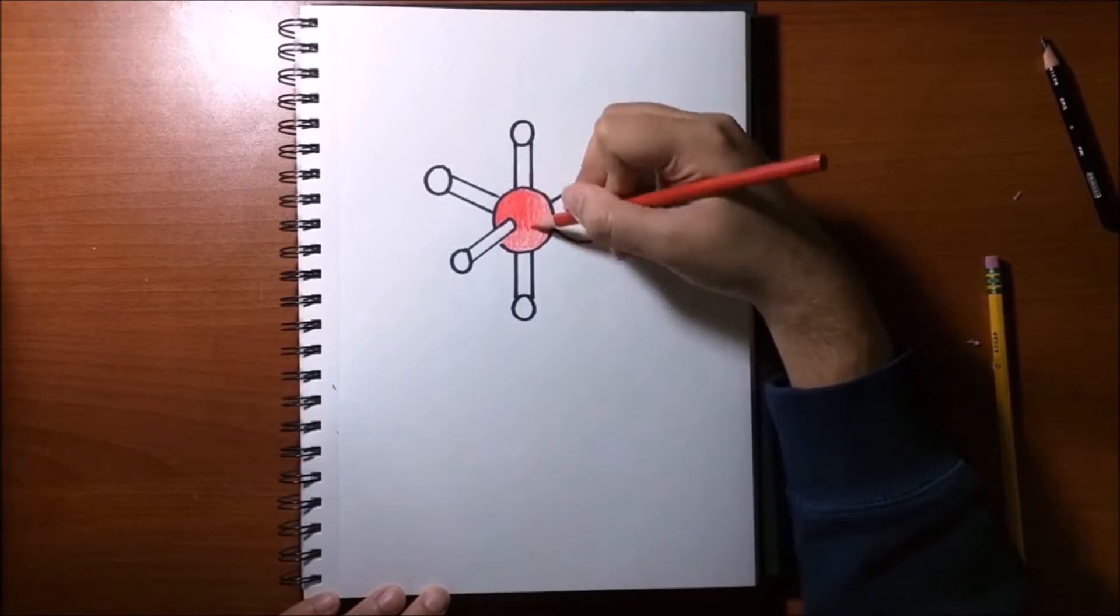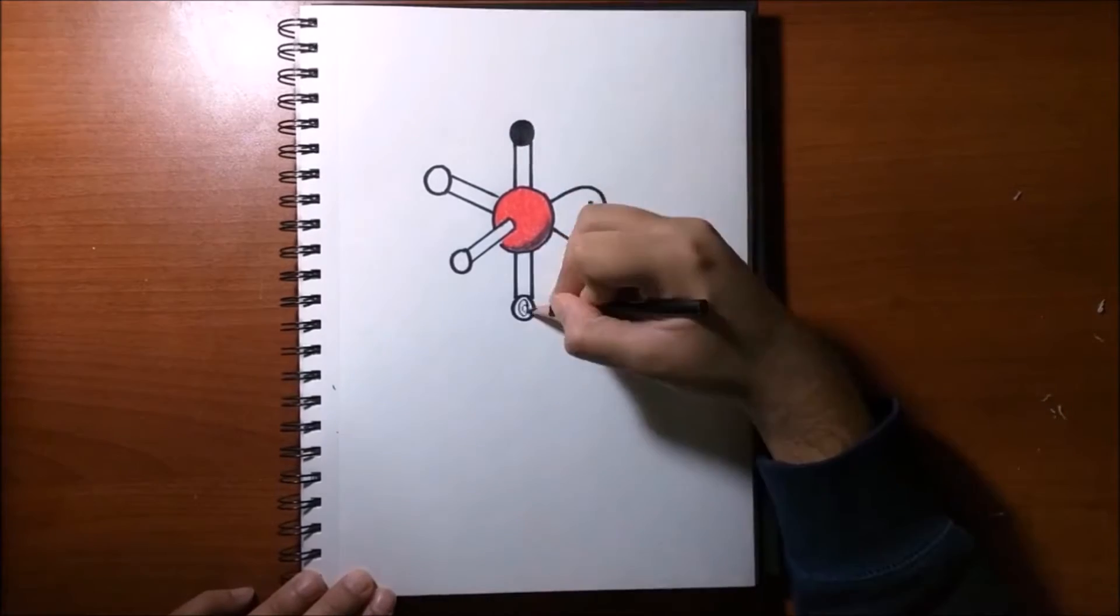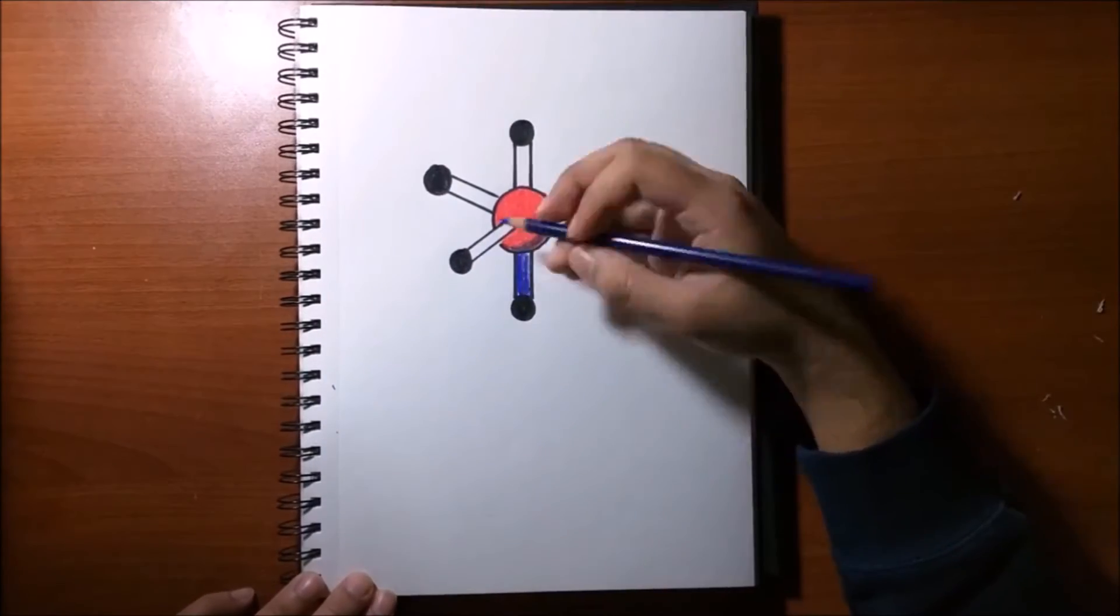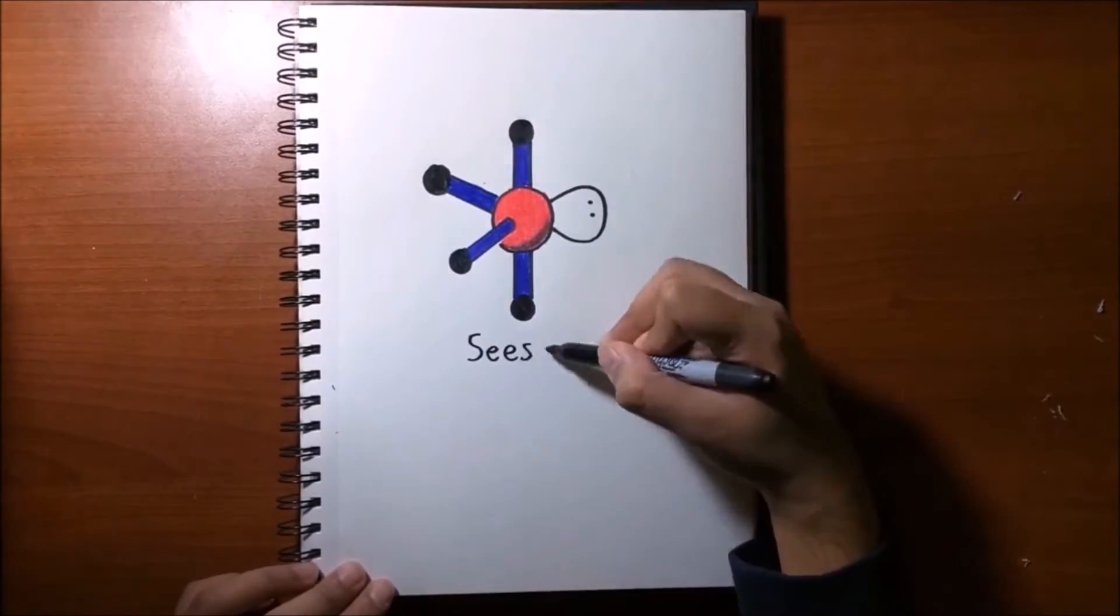This arrangement of electron groups forms bond angles less than 90 degrees along the axis and less than 120 degrees otherwise. An example of this shape is sulfur tetrafluoride.